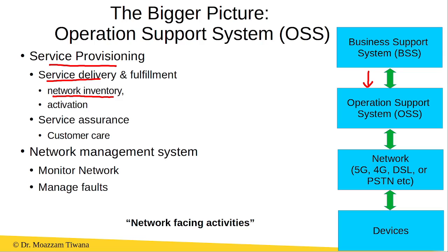For example, if the SIM is available for this user or not, or whether there is sufficient capacity in the network to activate this service or not. And if it is verified in the network inventory that this service is possible, then the fulfillment of this service is done.